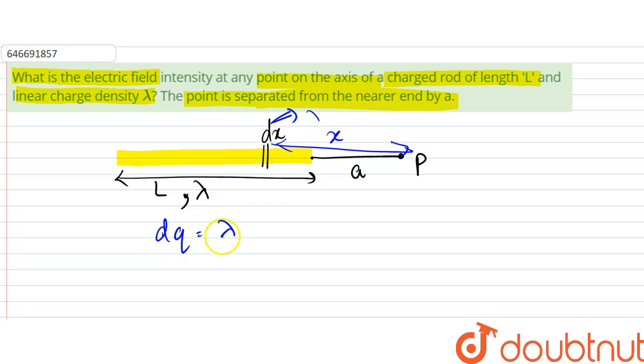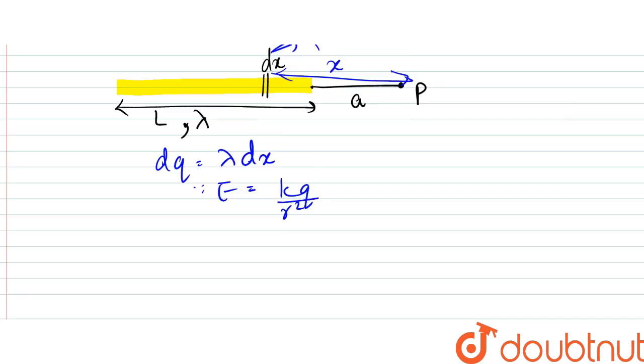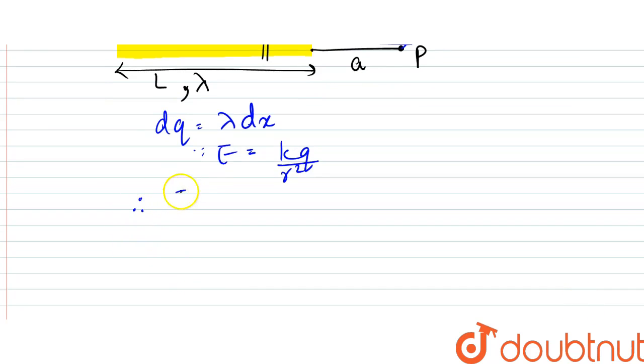dq would be equal to lambda dx. So since electric field is equal to kq by r square, that is the distance square. Therefore here, electric field at point P due to this small dx would be k lambda dx by x square.